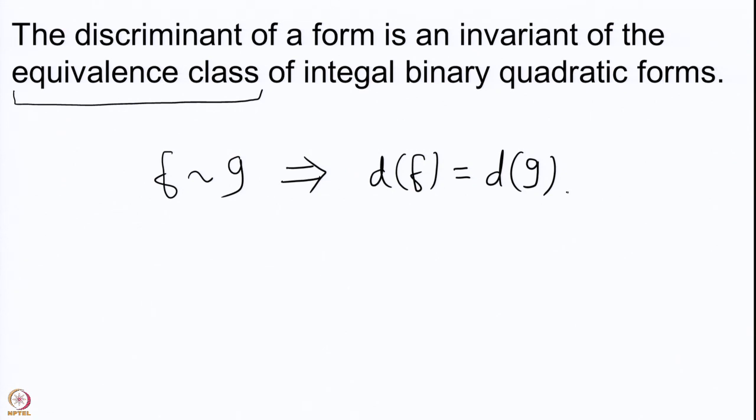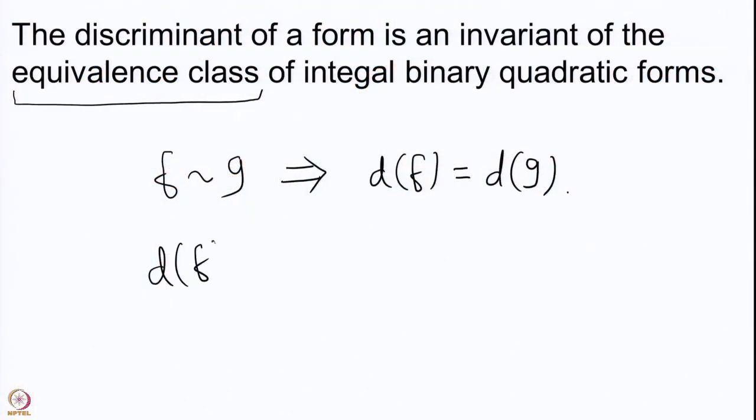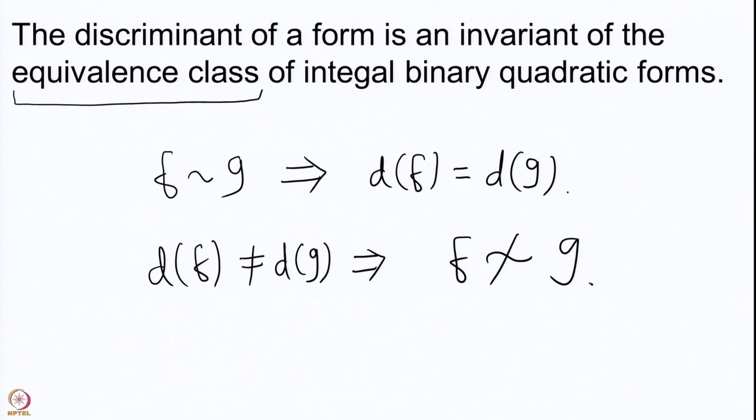We introduced this equivalence in the hope that we could go from a difficult form to a simpler form. We saw that value sets do not change, and now we also have that the discriminant does not change. Later, we are going to fix these discriminants and identify all integral binary forms of a given discriminant. If two integral binary quadratic forms have different discriminants, they cannot be equivalent, since the discriminant is an invariant of the equivalence class. So the discriminant will help us in understanding the equivalence classes.